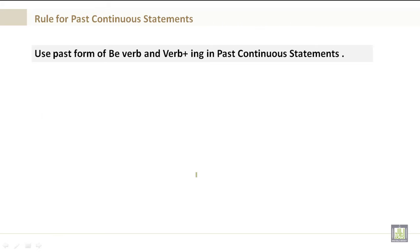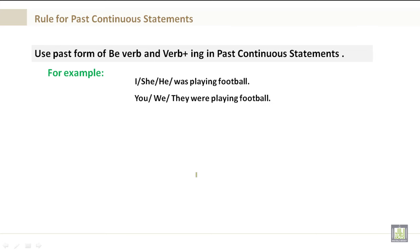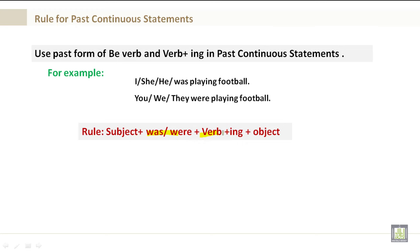The rule for past continuous statements: use the past form of the be verb and verb plus -ing in past continuous statements. For example, I, she, he was playing football. You, we, they were playing football. Rule: Subject plus was or were plus the verb plus -ing plus the object. Was or were is the past form of the be verb.